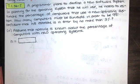The problem statement says that a programmer plans to develop a new software system. In planning for the operating system that he will use, he needs to estimate the percentage of computers that use a new operating system. How many computers must be surveyed in order to be 99% confident that his estimate is in error by no more than 3%?